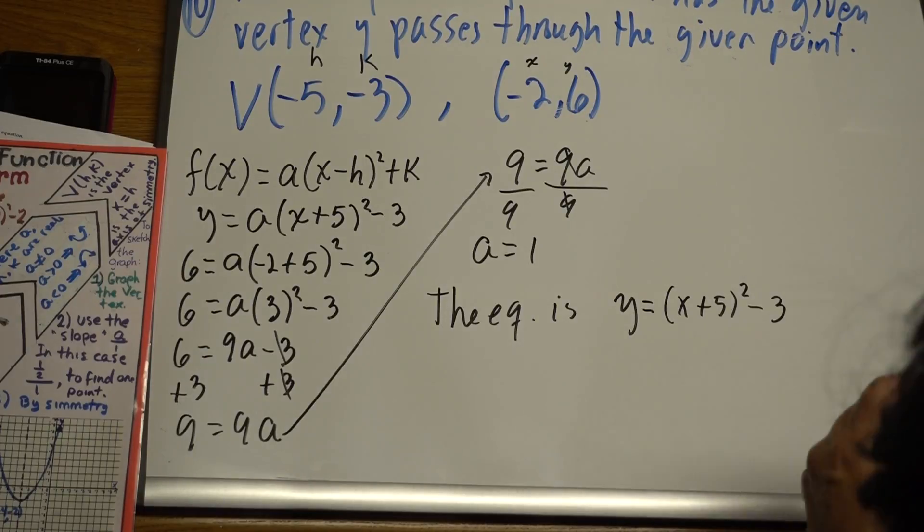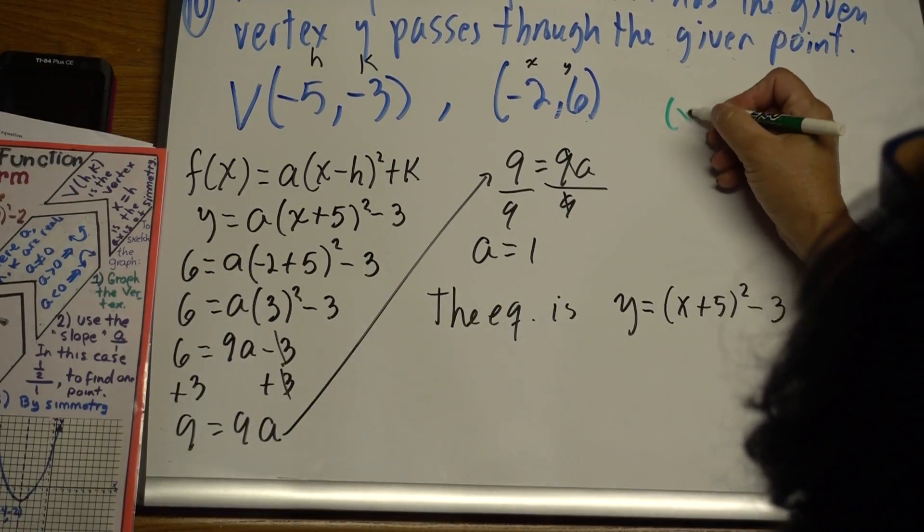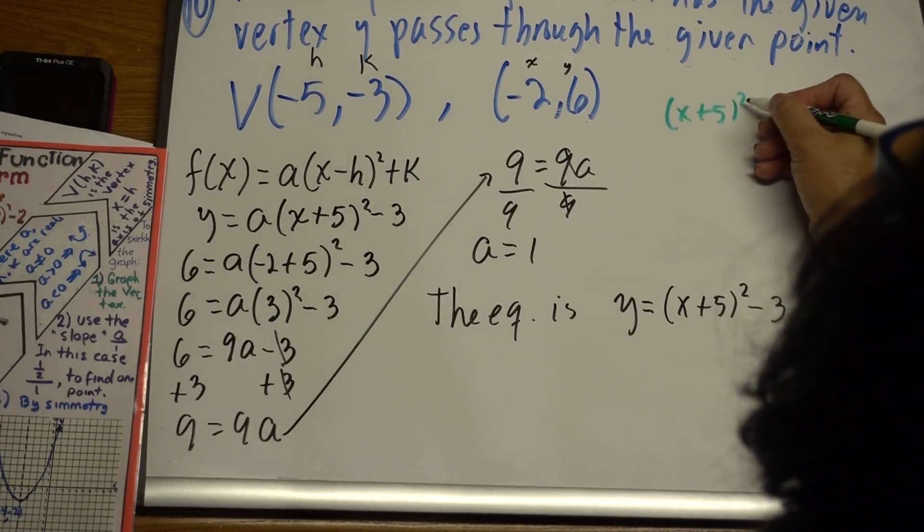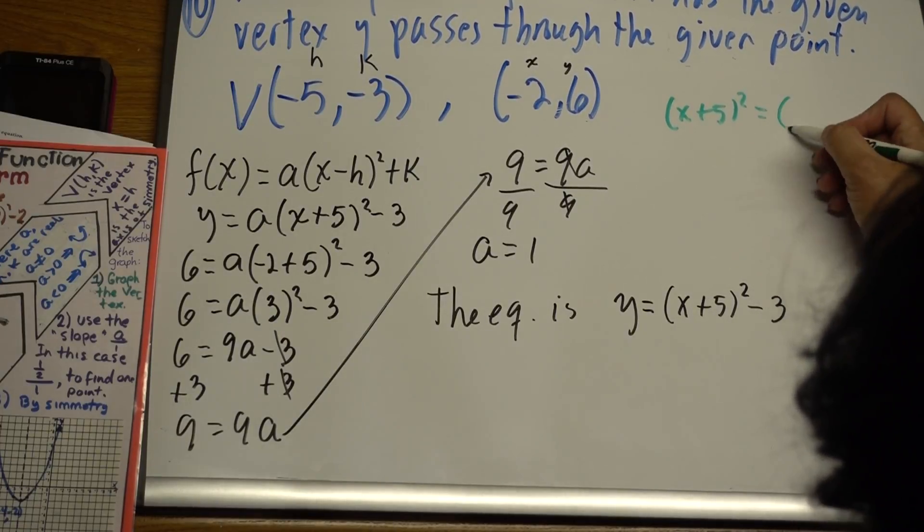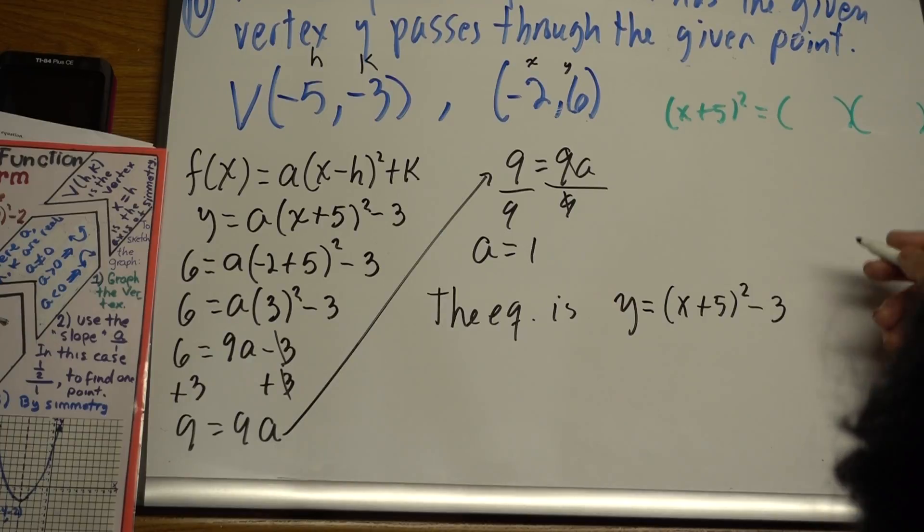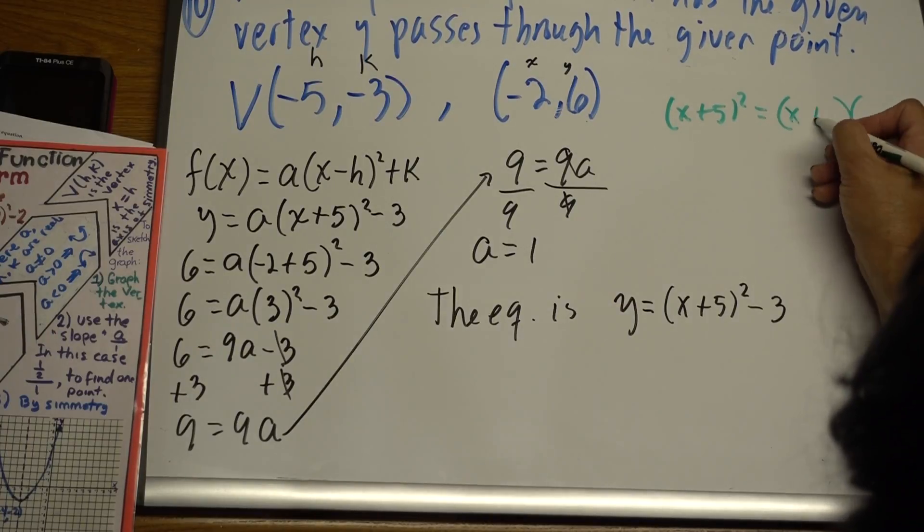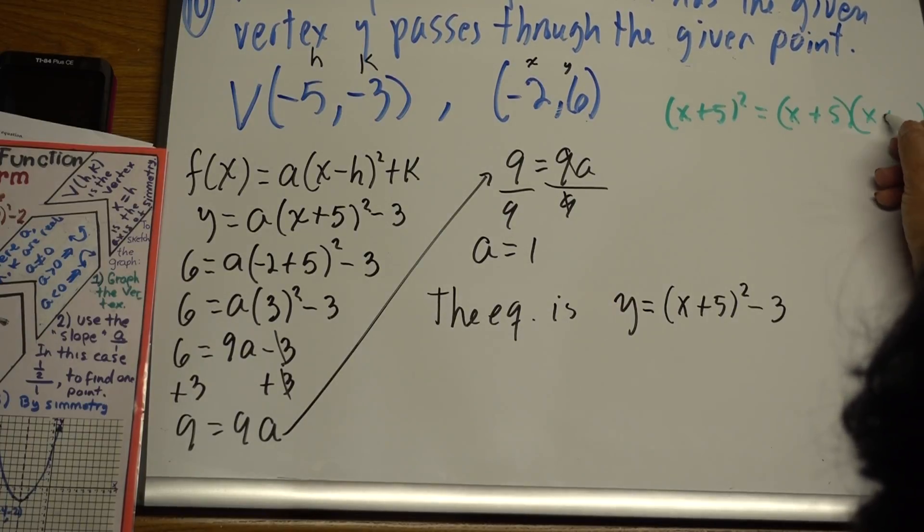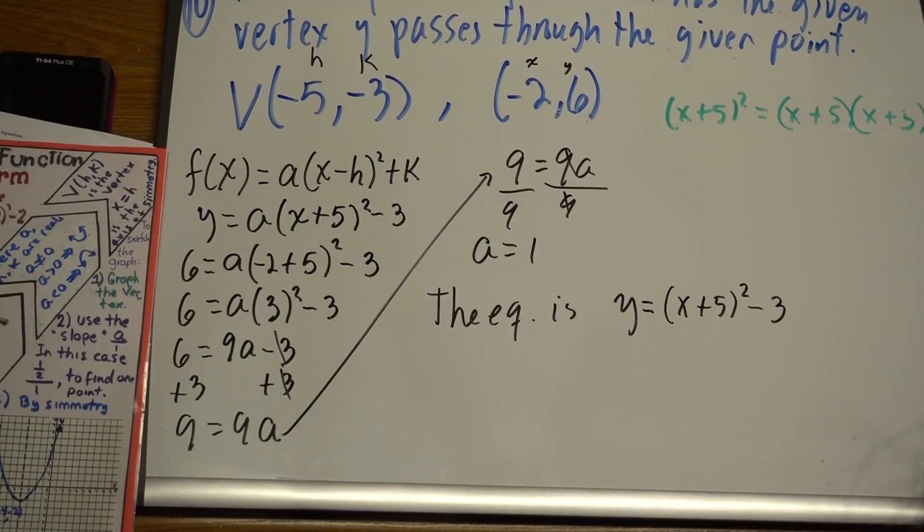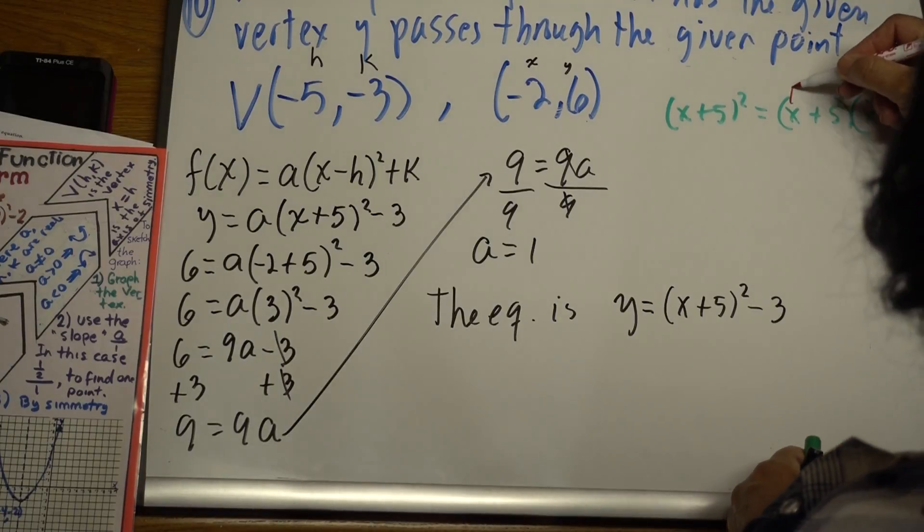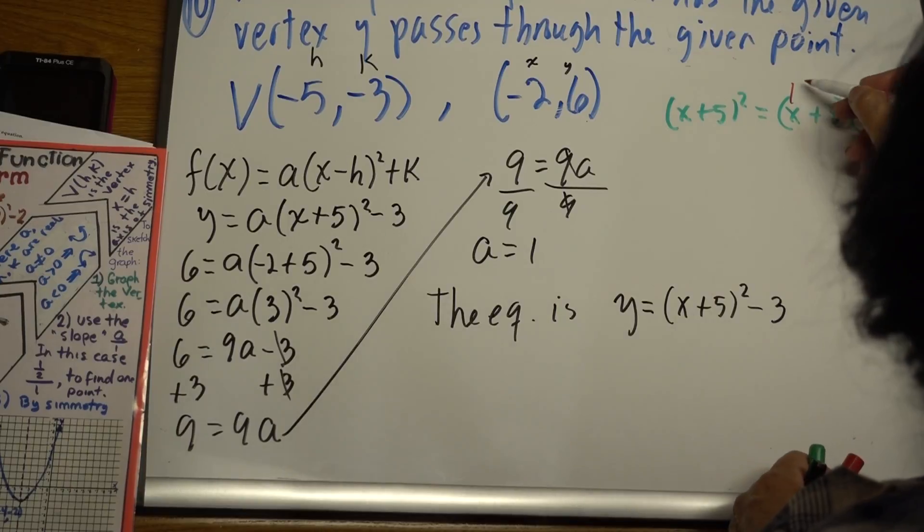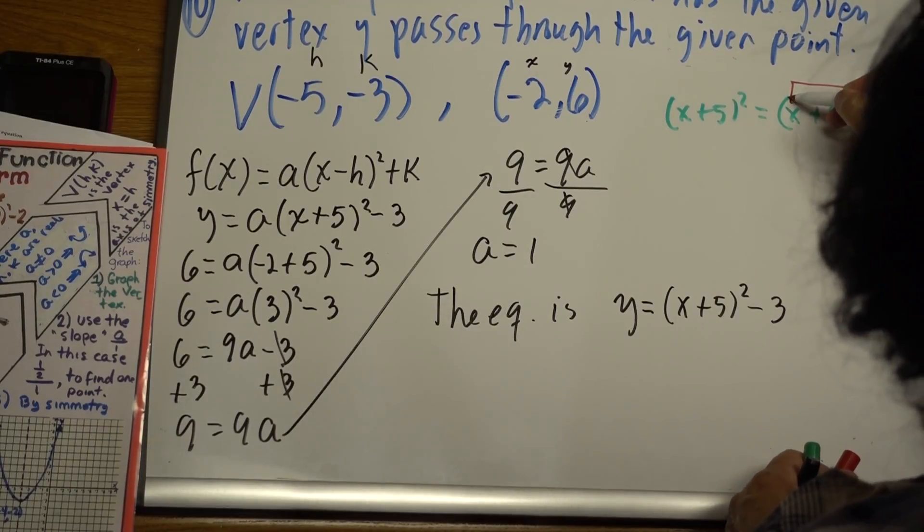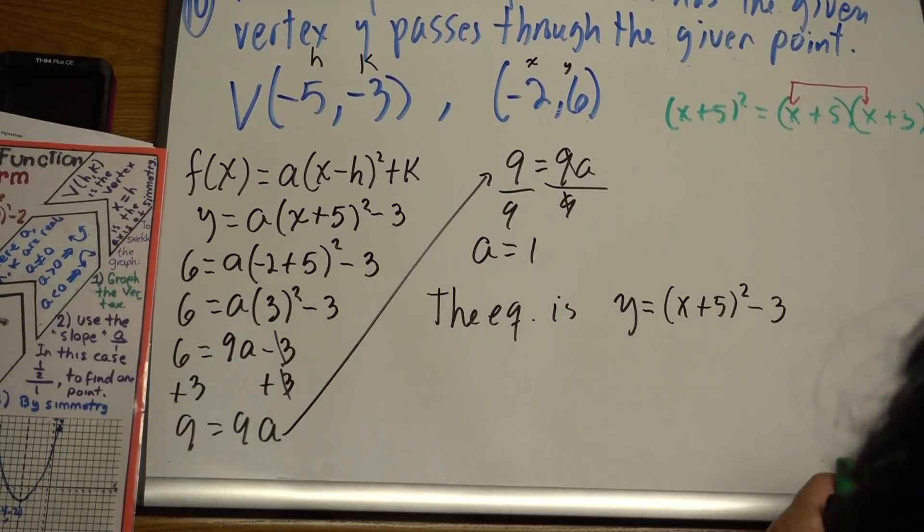So let me develop it over here. X plus 5 to the second power. We can use a rule, but we're going to use FOIL, because we reviewed this concept last class. X plus 5 times x plus 5. So first, remember, the first one, x times x, so it's going to be x squared.